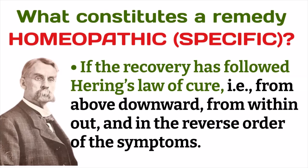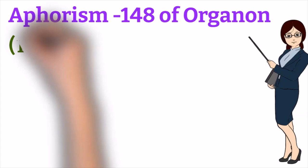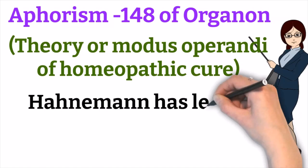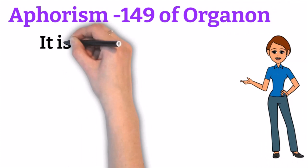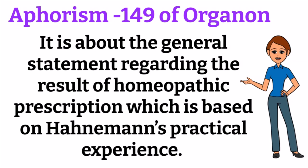Kent then mentions Aphorism 148, noting that Hahnemann gave the theory — the modus operandi of homeopathic cure — under this aphorism but left it to us whether we agree with it or not; he has not bound us to accept it. However, Aphorism 149 gives a general statement regarding the result of homeopathic prescription based on Hahnemann's practical experience, and so it must be accepted by us because it is true.